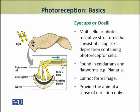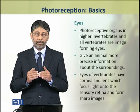The multicellular photoreceptive structures consist of a cup-like depression containing photoreceptive cells. These simplest structures are called eye cups or oscilli, and are found in some cnidarians and in flat worms such as planaria. These simple multicellular structures cannot form images and provide the animal only a sense of direction.